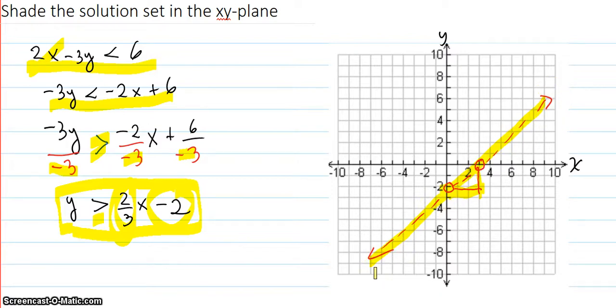Now all we have to do now is decide what to shade. So the borderline is y equals 2 thirds x minus 2. That's the borderline which we don't get. We want all the points that have y's greater than that. So here's all the y values. So we want all the y's greater.